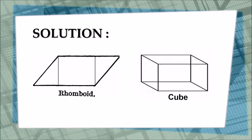Both rhomboid and cube are made of straight lines so they cannot have a circular cross section. Thus we discard options C and D.